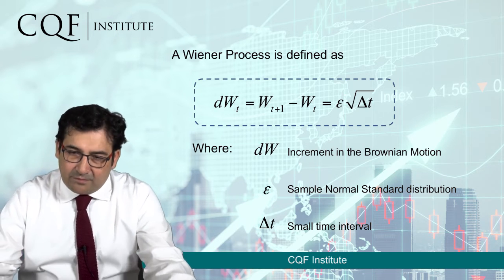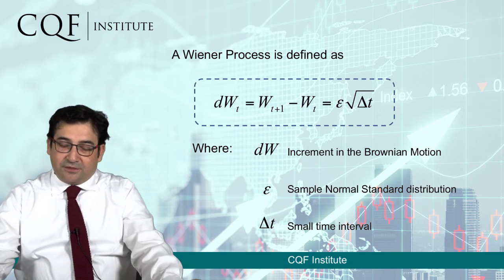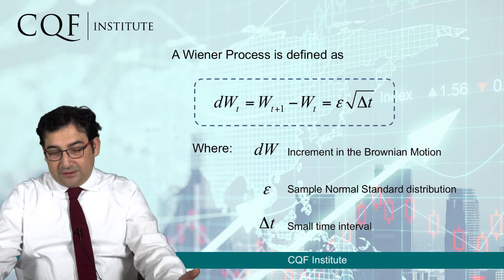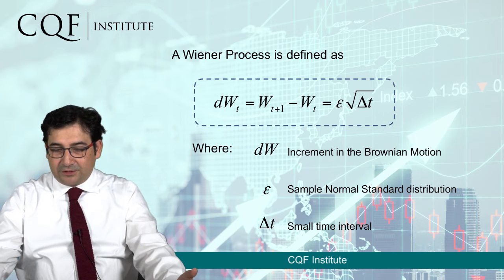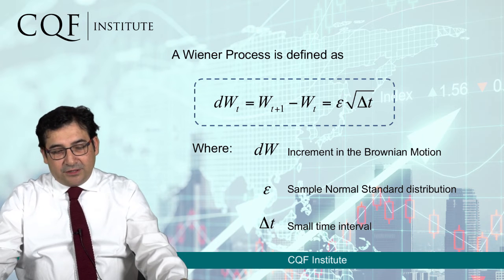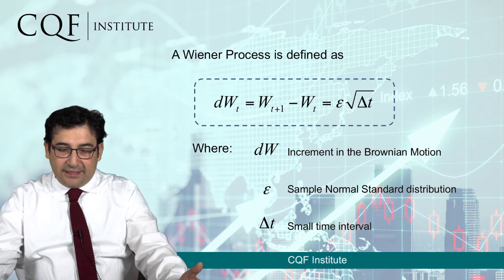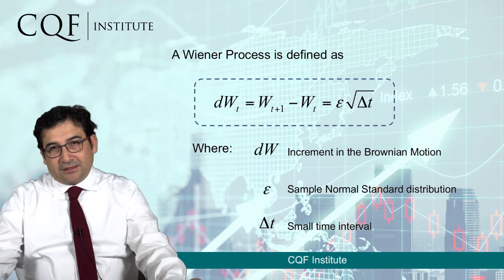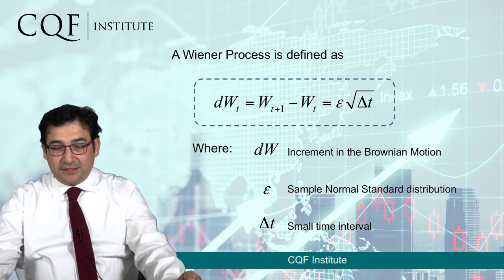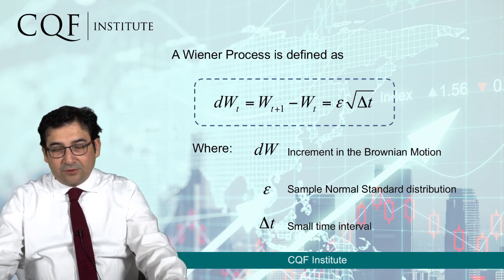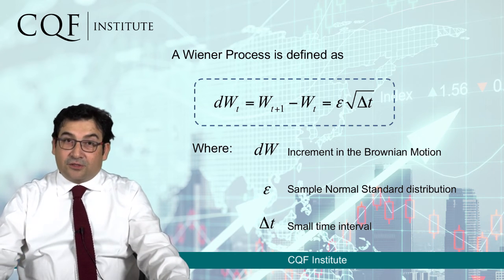Norbert Wiener, an American mathematician of the 20th century, was able to show that you can approximate this increment in the Wiener process — or Brownian motion as it is referred to physically — using two parameters: epsilon, which represents a sample from a standard normal distribution, and the square root of delta t, where delta t represents the change in time.